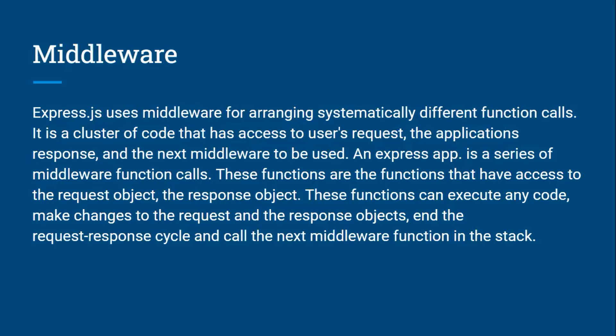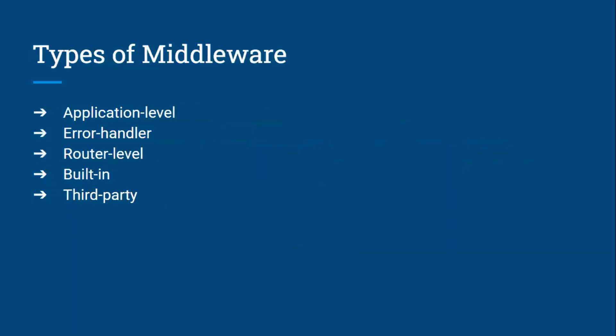Express.js uses middlewares for arranging and systematically organizing different function calls. Middleware is a cluster of code that has access to user requests, the application response, and the next middleware to be used. Types of middlewares include: application-level, error handler, router-level, built-in, and third-party. As we move into coding, observe how error handlers deal with errors, and how router-level middleware controls routing paths.